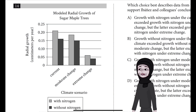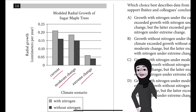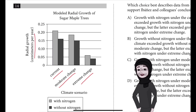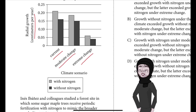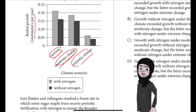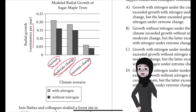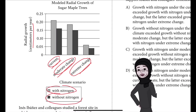Moving on to question number 14: modeled radial growth of sugar maple trees. The x-axis shows current, moderate change, and extreme change climate scenarios, and the y-axis shows radial growth in centimeters per year. Light gray indicates with nitrogen and black indicates without nitrogen.